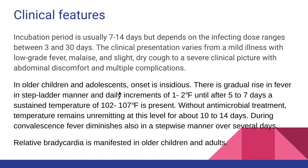In older children and adolescents, the onset is usually insidious with a gradual rise in fever in a step-ladder manner — enteric fever is a typical example of step-ladder fever. There is a daily increment of about 1 to 2 degrees Fahrenheit over 5 to 7 days, after which the temperature becomes constant at around 100 to 107°F. If treatment is not initiated, the temperature remains unremitting for about 10 to 14 days, after which during convalescence the fever falls in a stepwise pattern.